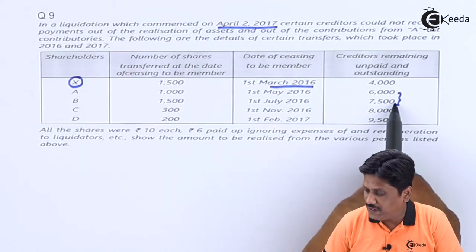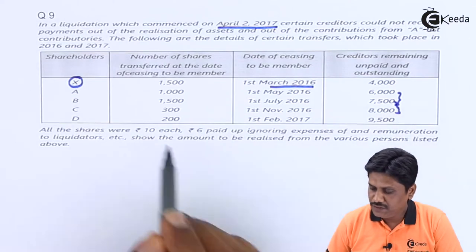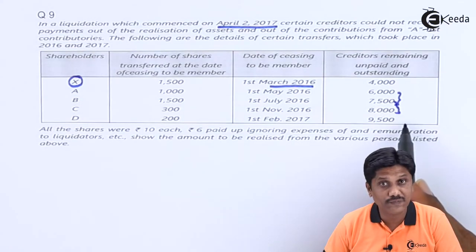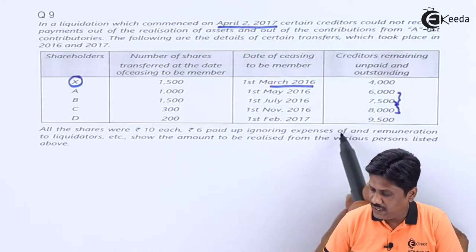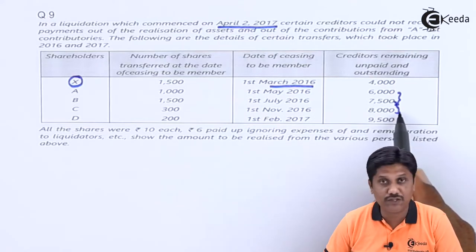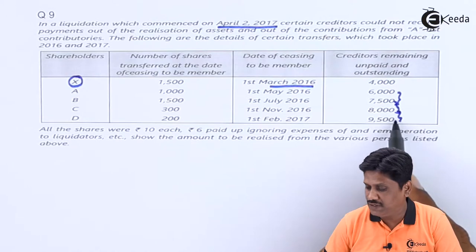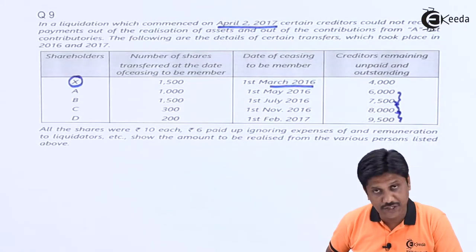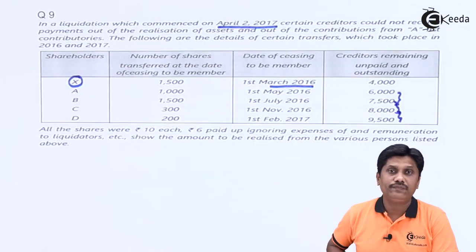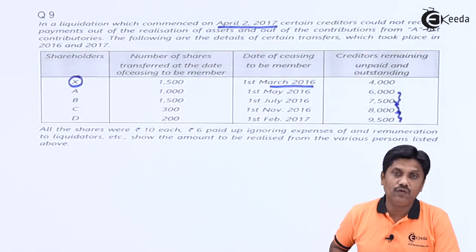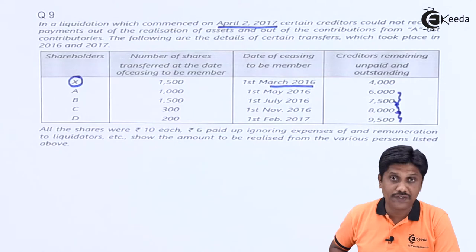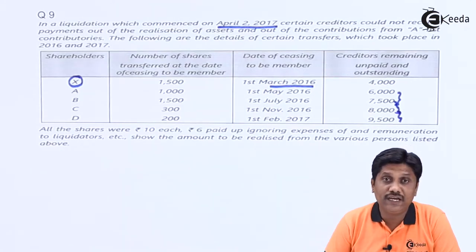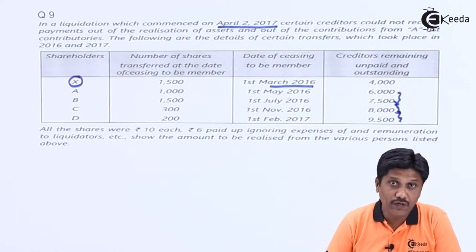After that, Rs. 7,500 became Rs. 8,000; here A and B will not share — only C and D will share. Thereafter the liability became Rs. 9,500, so the additional Rs. 1,500 — A, B, and C will not bear it. Only the last transferor, Mr. D, will bear that amount. So we need to decide how much liability each individual shareholder will bear.